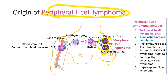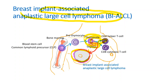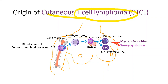Peripheral T cell lymphoma has several subtypes — most commonly peripheral T cell lymphoma NOS, anaplastic large cell lymphoma, and angioimmunoblastic T cell lymphoma, among others. Breast implant-associated anaplastic large cell lymphoma has received lots of media attention lately. It originates from activated T cells, and patients with rough surface implant capsules have a higher risk. Cutaneous T cell lymphoma, like mycosis fungoides and Sézary syndrome, originates from CD4 helper T cells.